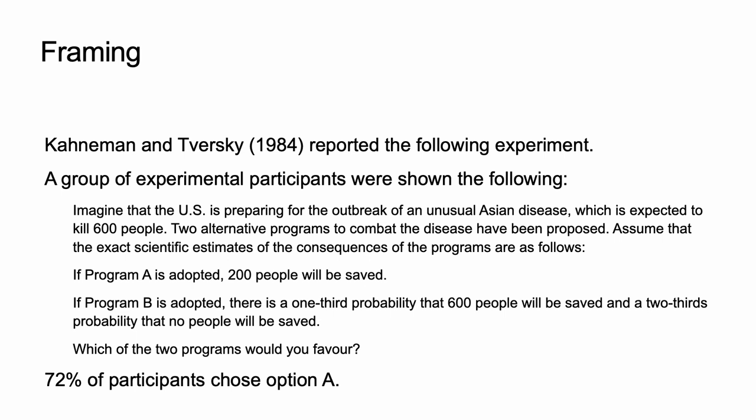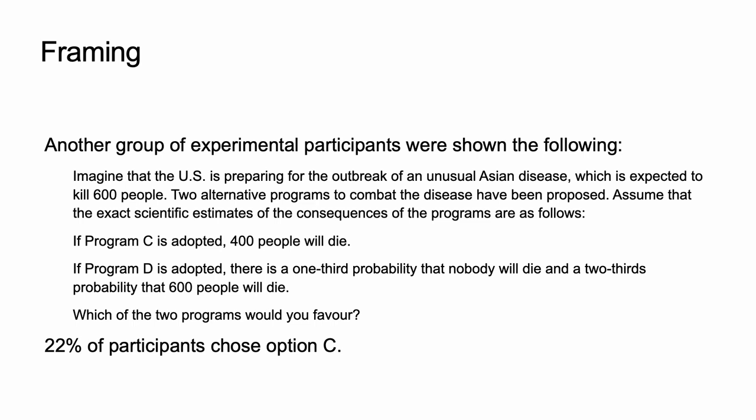72% of participants chose option A. Another group of experimental participants were shown the following. Imagine that the U.S. is preparing for the outbreak of an unusual Asian disease, which is expected to kill 600 people. Two alternative programs to combat the disease have been proposed. Assume that the exact scientific estimates of the consequences of the programs are as follows. If program C is adopted, 400 people will die. If program D is adopted, there is a one-third probability that nobody will die and a two-thirds probability that 600 people will die. Which of the two programs would you favor? 22% of participants chose option C.